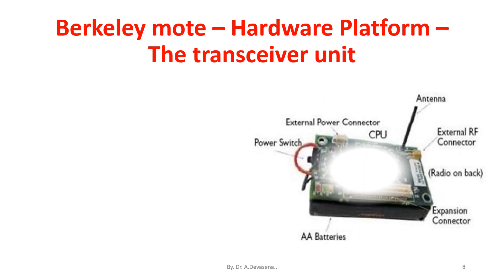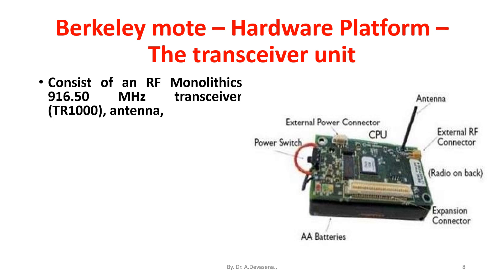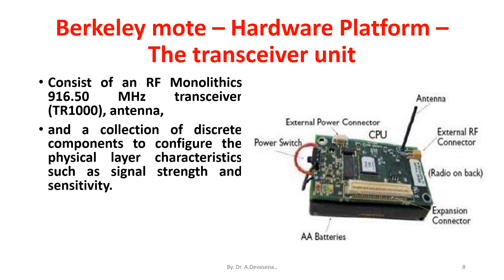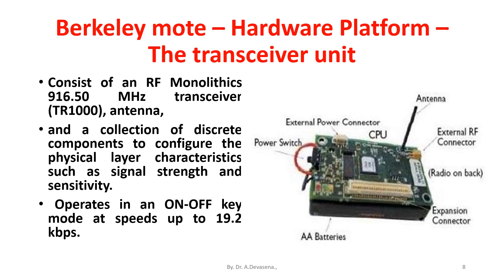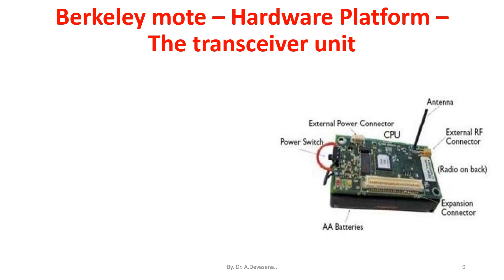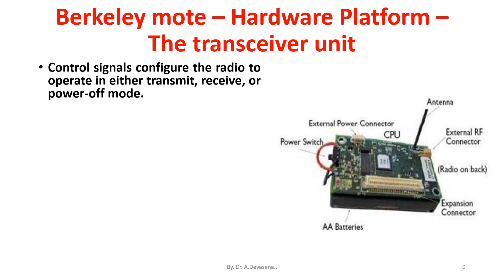The transceiver unit consists of an RF Monolithics 916.5 MHz transceiver antenna and a collection of discrete components to configure the physical layer characteristics, such as signal strength and sensitivity. The transceiver unit operates in an on-off key mode at speeds up to 19.2 kbps. The control signal configures the radio to operate in either transmit, receive, or power-off mode. The radio contains no buffering, so each bit must be serviced by the controller on time.